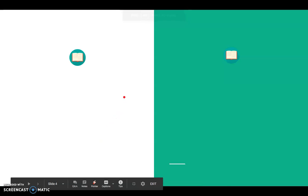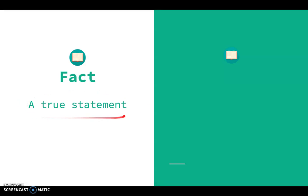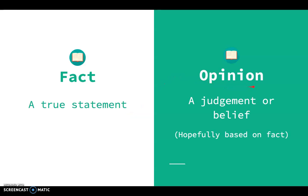A fact is a true statement. You can prove a fact — it's not something you can dispute or argue about because it's just true. An opinion, though, is a judgment or a belief. Hopefully it's based on fact, but it is something you can argue about or debate. Some authors will try to pass their opinion off as a fact, even when they cannot actually prove it.